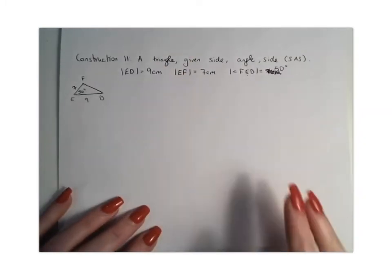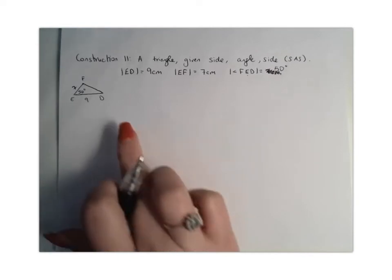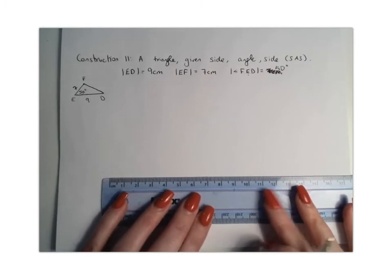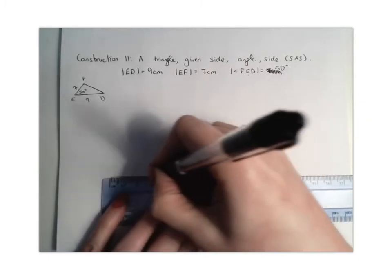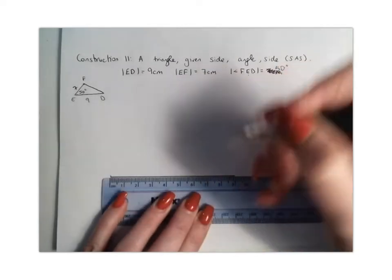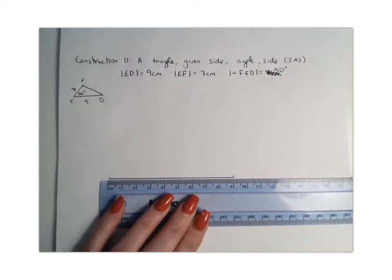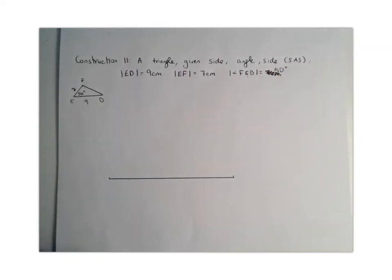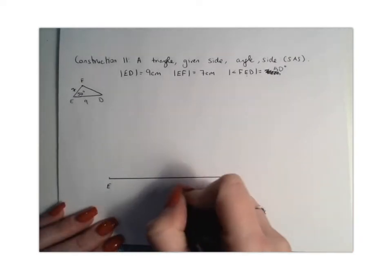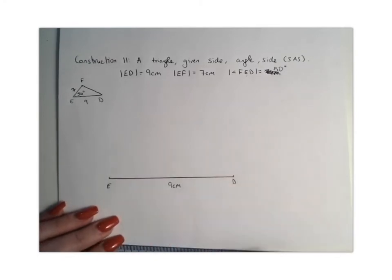So now I have an idea of what my triangle should look like. I'm going to start off with the base line again. I'm going to get my ruler and measure 9cm. I have mentioned this in other construction videos but I'm using pen purely because I'm doing this as a video, but you should be doing it using pencil. I'm going to mark that as ED and that's 9cm.